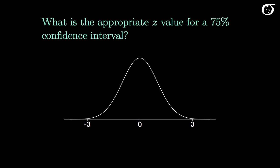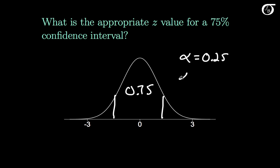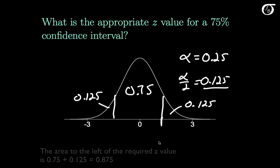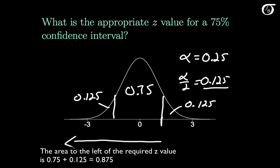What is the appropriate z value for a 75% confidence interval? Here we put a middle area of 0.75. Alpha, the remaining area, is 0.25, and alpha over 2 is 0.125. We put this area of alpha over 2 — 0.125 — in each of the two tails. The value we need has an area of 0.125 to the right and therefore an area of 0.875 to the left.